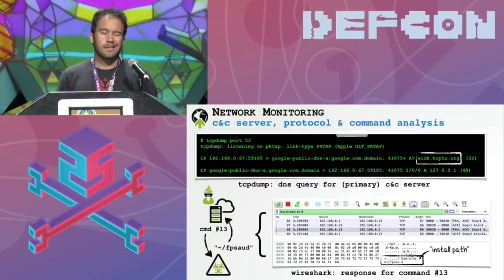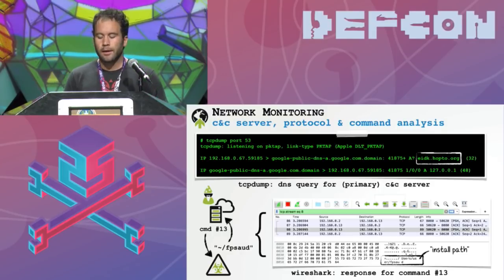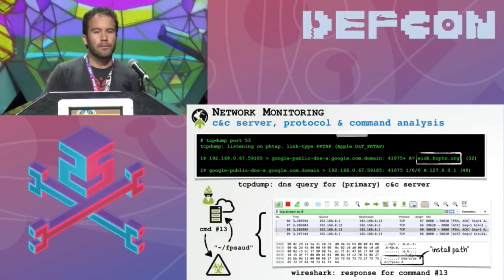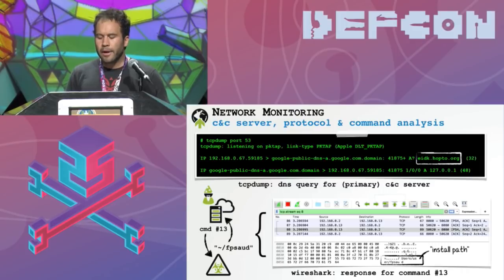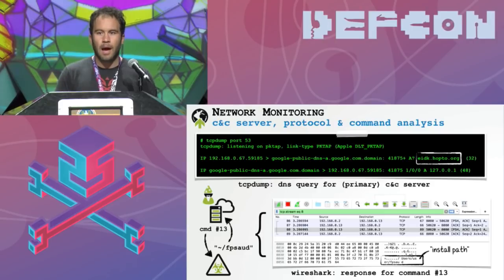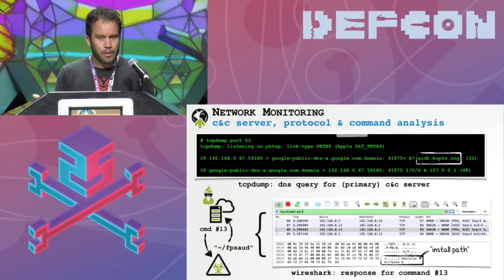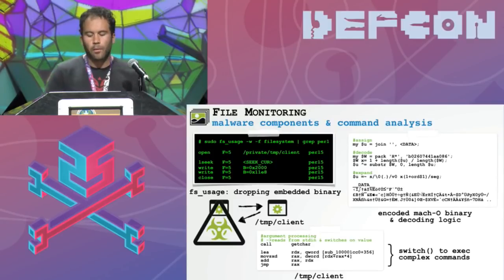Let's take a closer look at each monitoring approach, starting with network monitoring. On Mac OS this is pretty easy — you can use TCP dump or Wireshark. At the bottom of the slide you can see the Wireshark capture when the malware is responding to command number 13. Originally I had no idea what command number 13 was, but when we task the malware and look at the network capture, we can see this command returns the location where the malware is installed. This is basically how we revealed the capability via the network monitor.